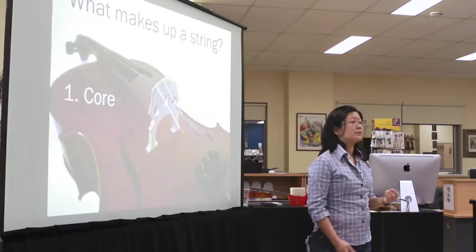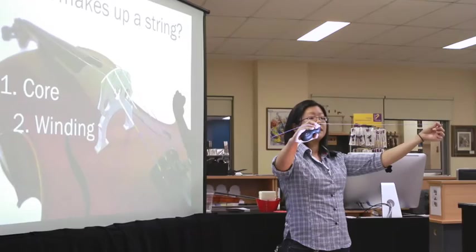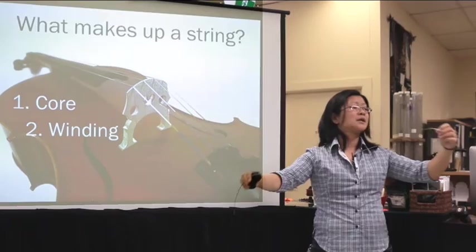The next part is the winding and that is the part that goes along the outside of the core. And this is wound perpendicular or almost perpendicular to the core.